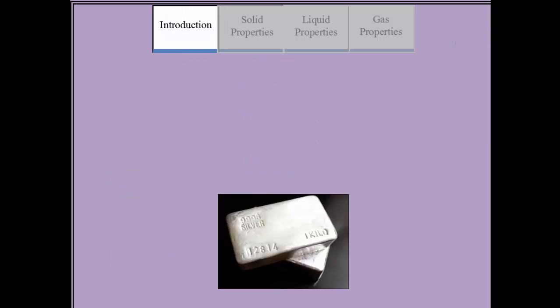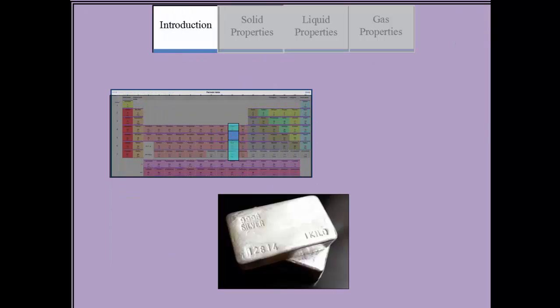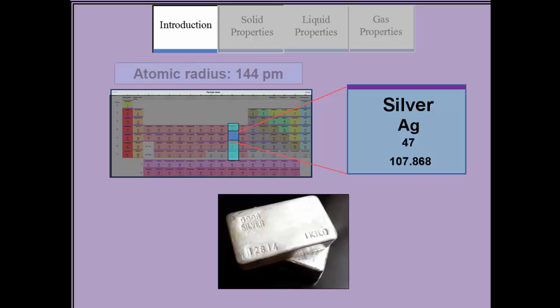Silver is a soft, gray-white, group 11 transition metal. Silver has an atomic number of 47, a molar mass of 107.868 grams per mole, and an atomic radius of 144 picometers.